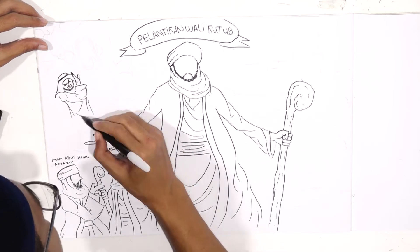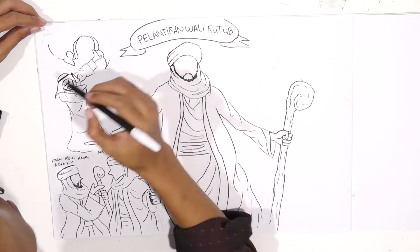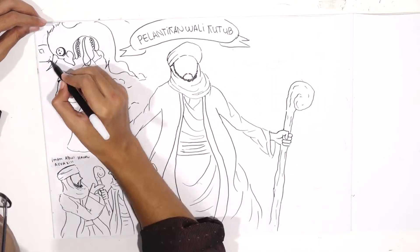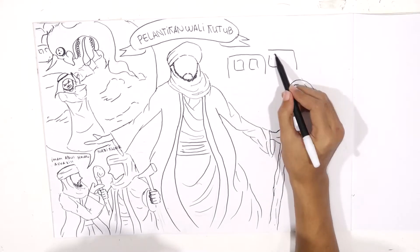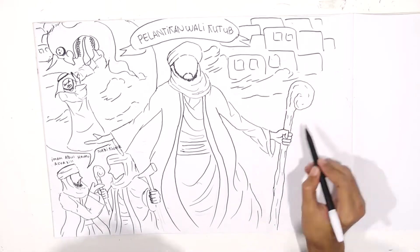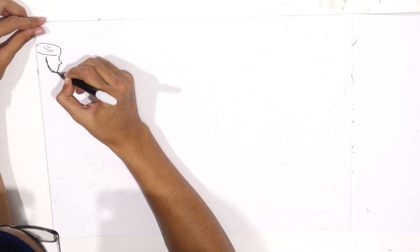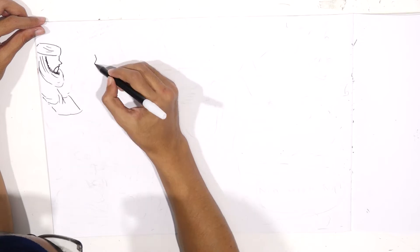Bagaimana ini bisa terjadi? Sebelumnya tak pernah ada wabah seperti ini. Meraja lelanya jin di banyak negeri. Demikian Syekh Ali mengungkapkan keprihatinannya. Menanggapi kerisauan itu, Nabi Khidir AS memberikan jalan keluar.